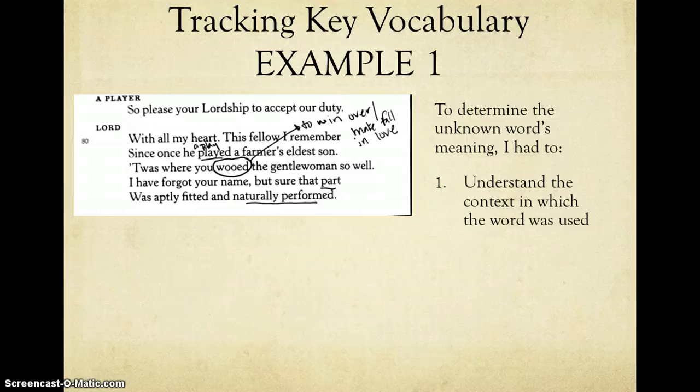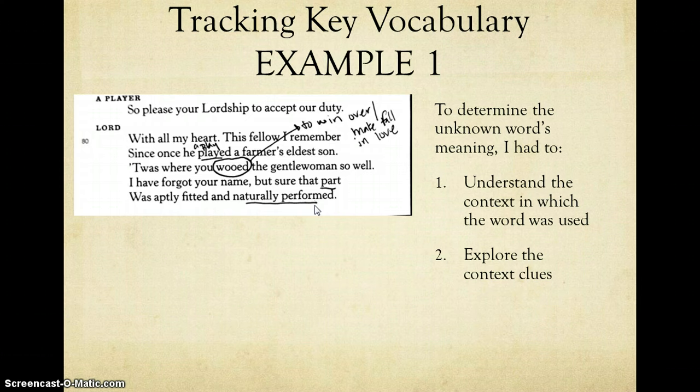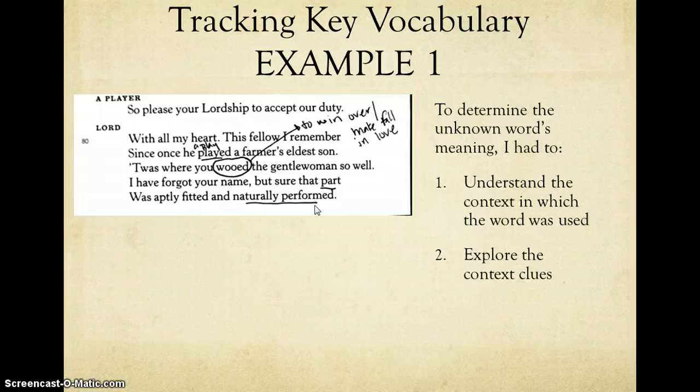First, I had to understand the context in which the word was used, who's talking to whom and about what, which I showed you I do understand. The second is I had to explore the context clues. And you see that I underlined some words, played, part, naturally performed. These words lead me to understand that the Lord's addressing an actor, so the player is actually just an actor. And they're talking about a play in which the actor took on the role of a farmer's eldest son.